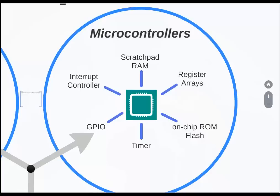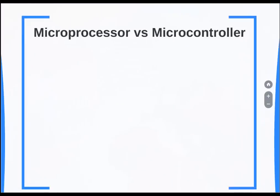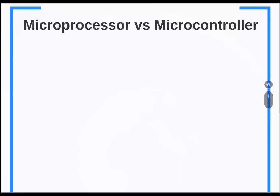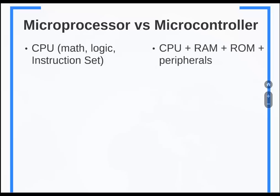One of the questions you may have is what is the difference between a microprocessor and microcontroller. A microprocessor is a CPU which can do math and logic and has instruction sets, whereas a microcontroller is made up of a CPU plus RAM and ROM and different peripherals. The microprocessor is a dependent unit. To build an embedded system around it you will need so many other things on a PCB and interface them.